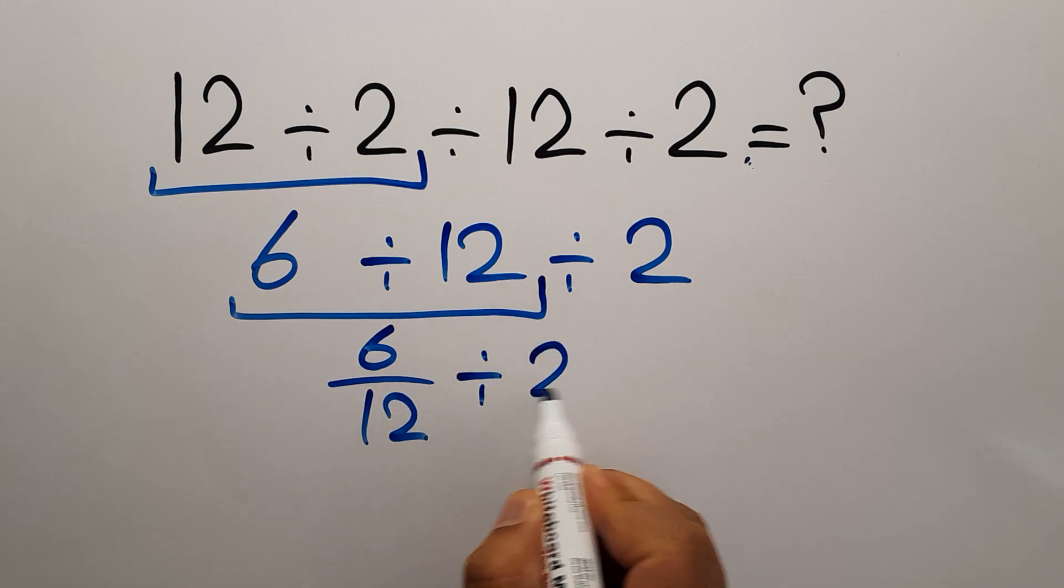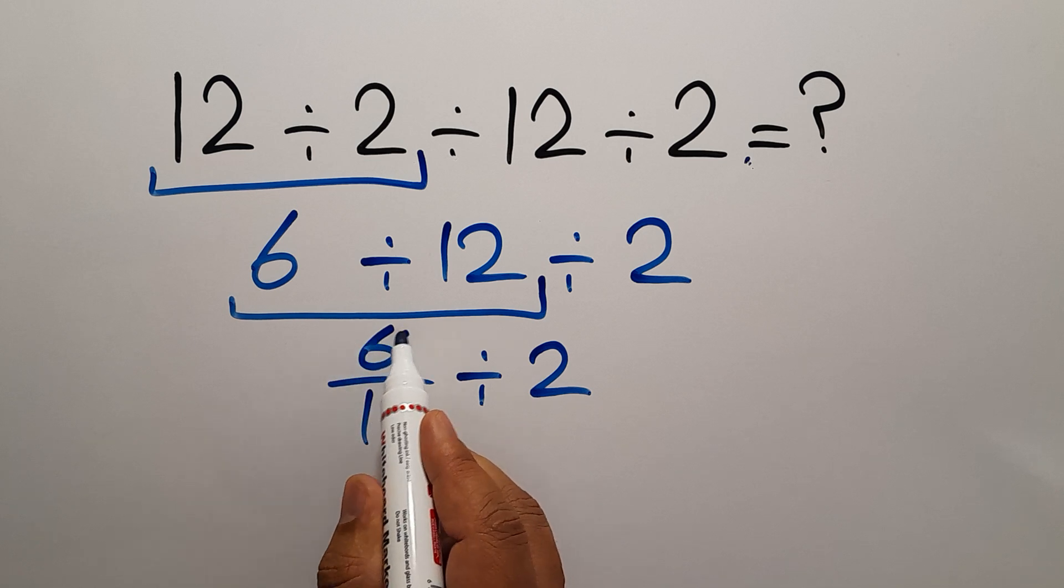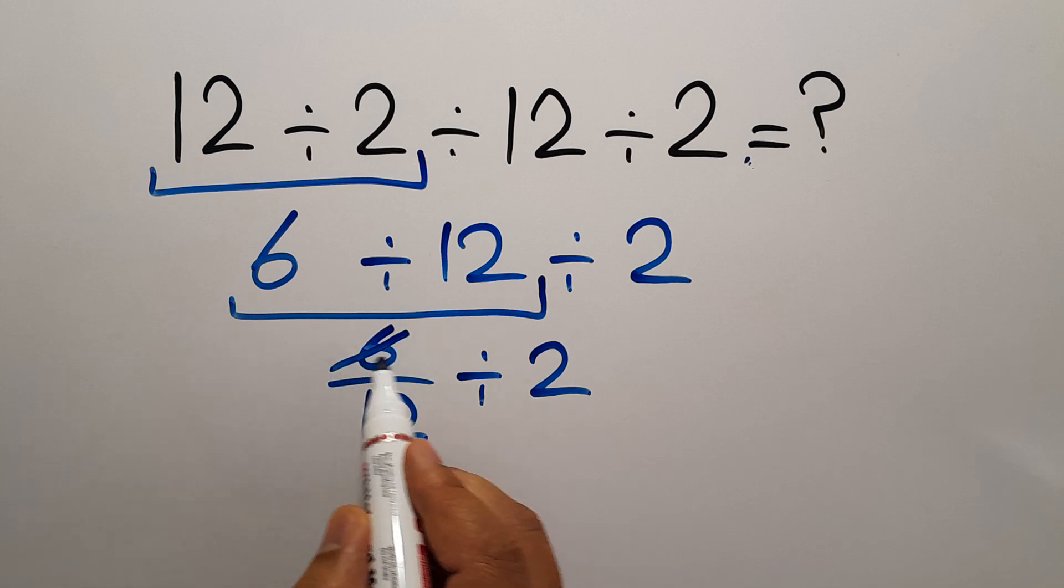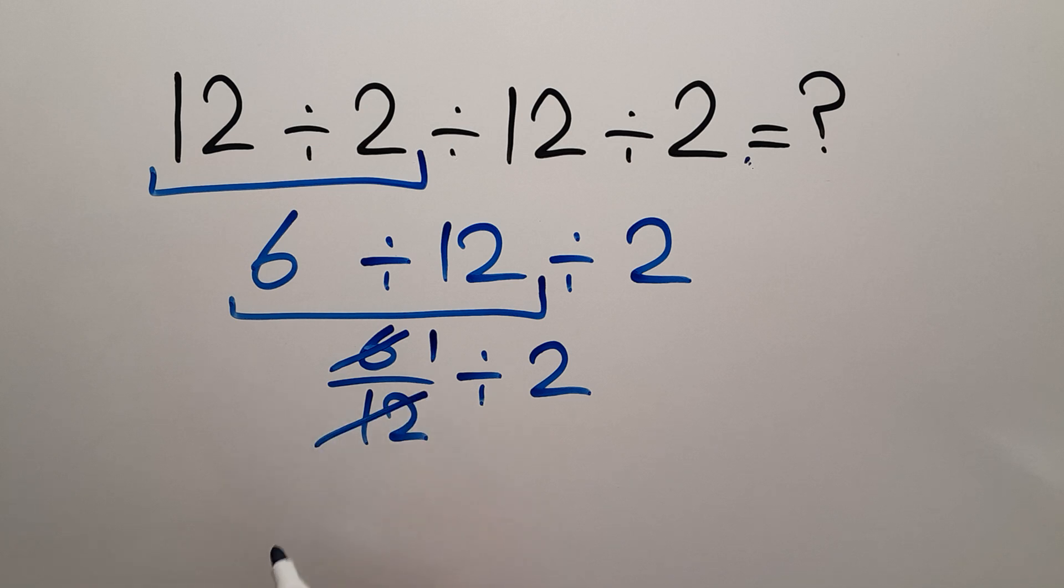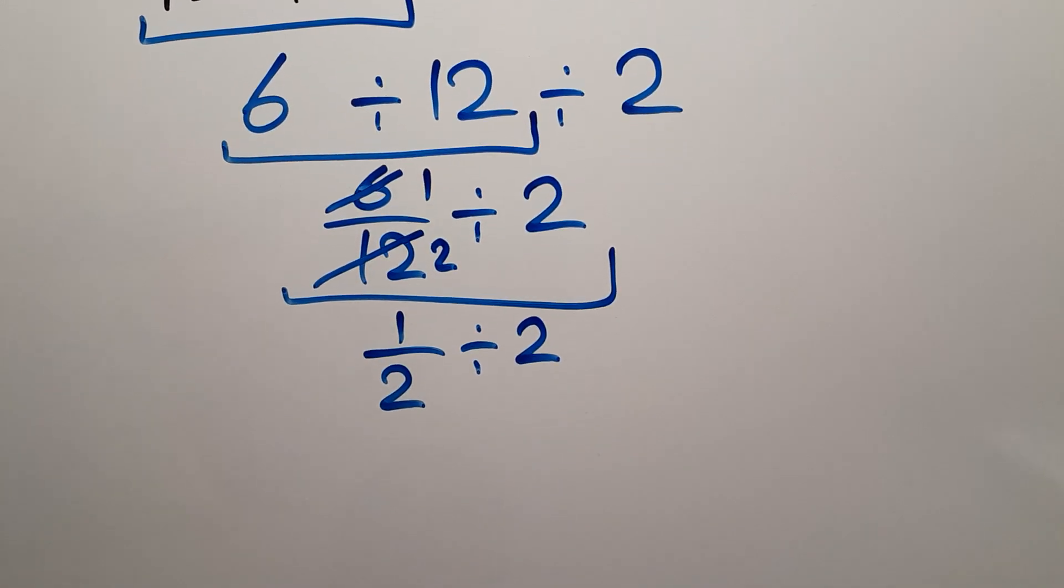Now we can easily simplify this fraction. 6 divided by 6 gives us 1, and 12 divided by 6 gives us 2. So we have 1 over 2 divided by 2.